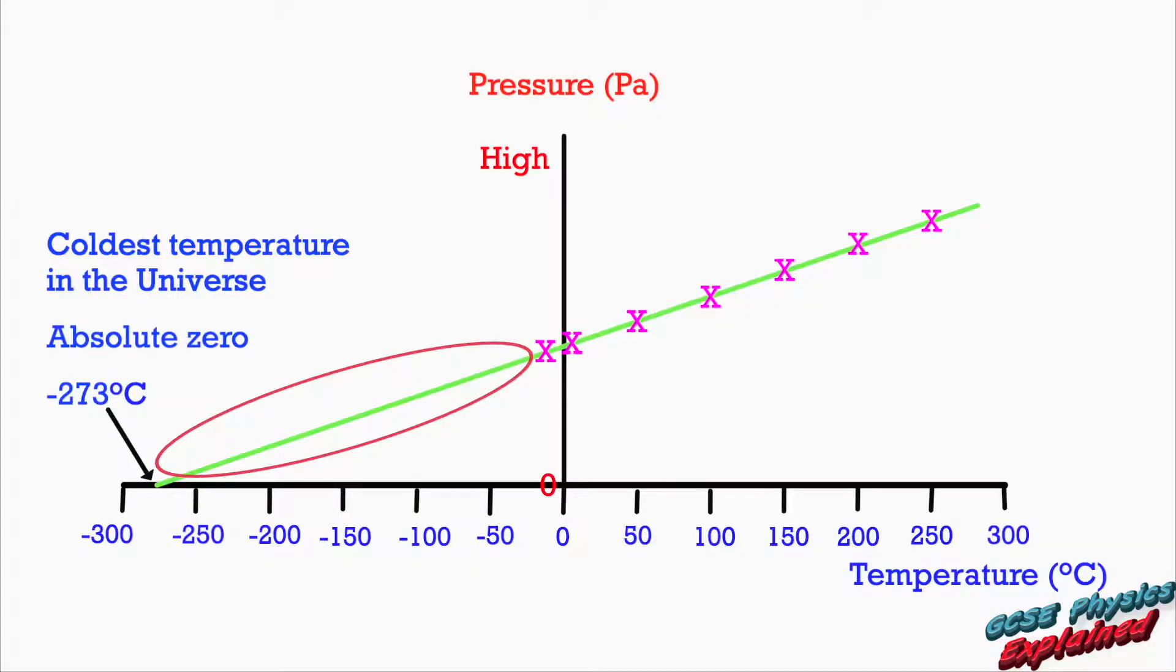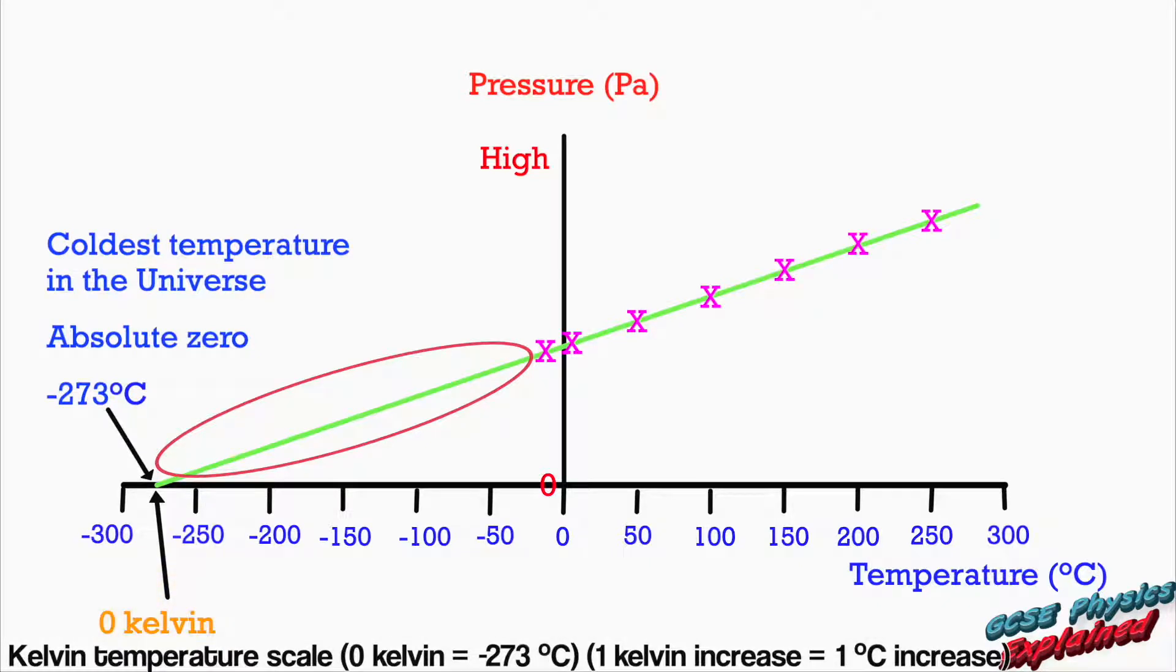So that's how the Kelvin scale of absolute temperature was born, with zero Kelvin being equal to minus 273 degrees Celsius, absolute zero, with every one Kelvin increase being equal to a one degree Celsius increase.